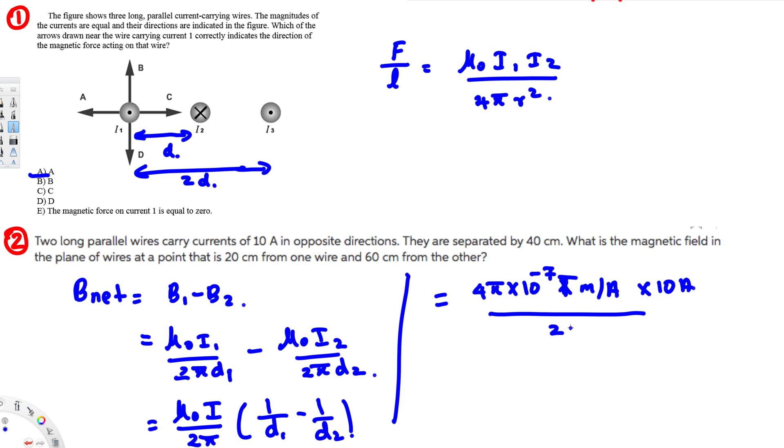Times 1 over the first distance, that is 20 centimeters, so this is going to be 1 over 0.2, then the second distance is 60 centimeters, that's going to be 1 over 0.6.